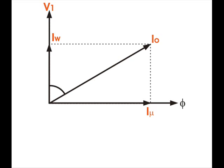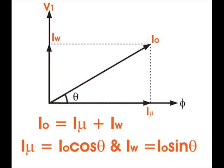Hence, the total primary current in the transformer on no load condition can be represented as the vector sum of Iμ and IW. And Iμ equals I0 cos θ, IW equals I0 sin θ. Thank you.